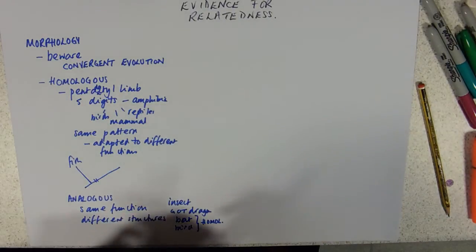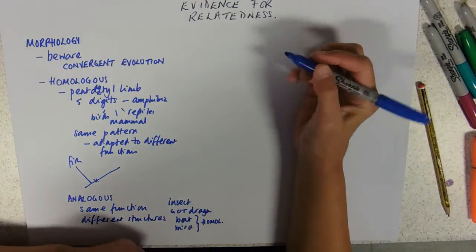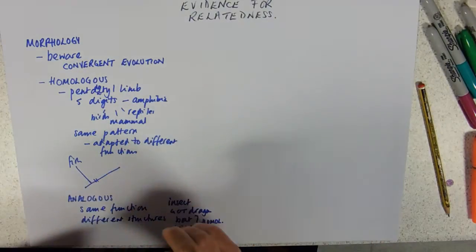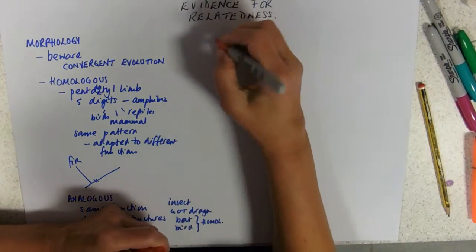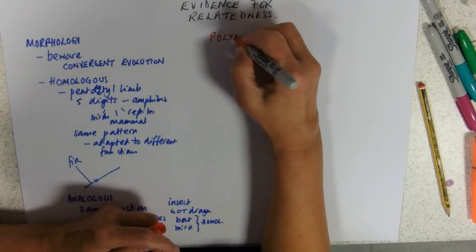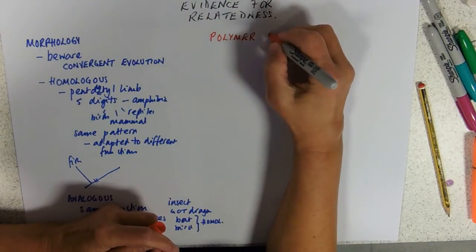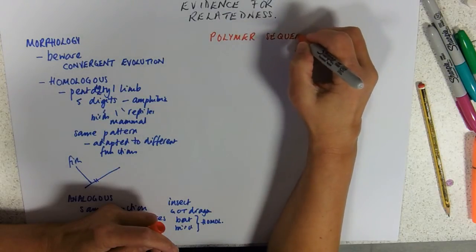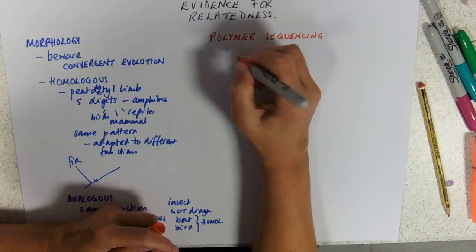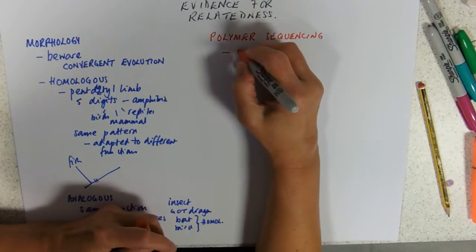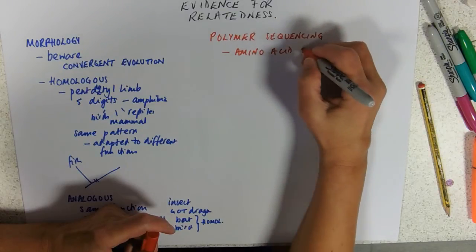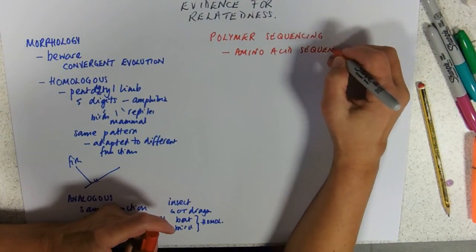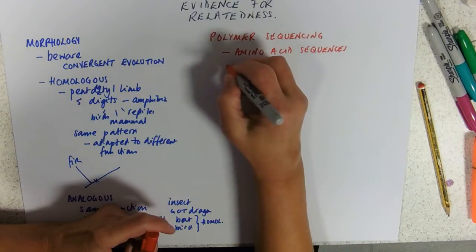So we've got morphological evidence. We also have more up-to-date, science-y type evidence. And here you're looking at polymers. You're looking really at polymer sequencing. So what polymers have we got available to do this with? We've got amino acid sequences in proteins.